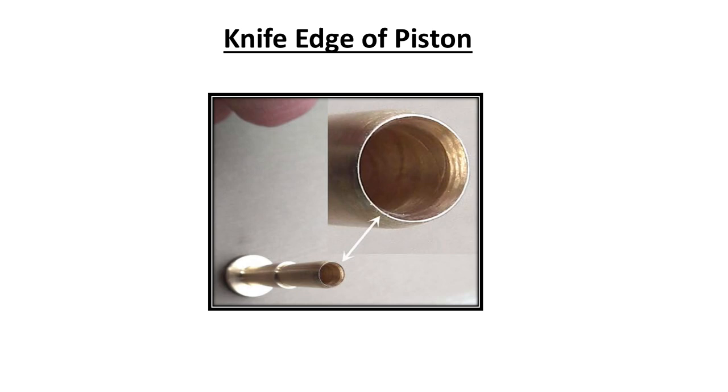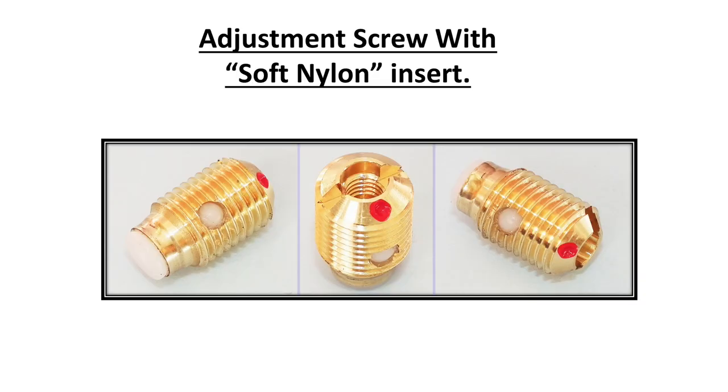What does the adjustment screw look like? If you look at this photo now, you can see an adjustment screw, and again with a soft nylon insert inside, which is what the knife edge seals itself on.